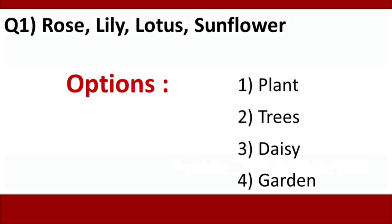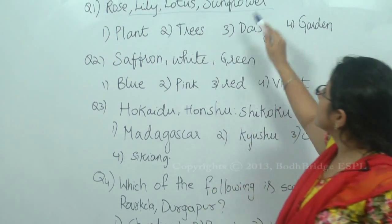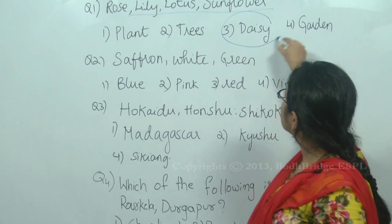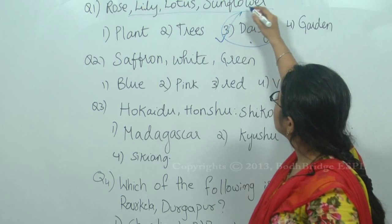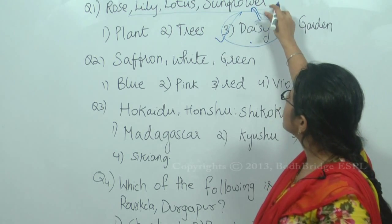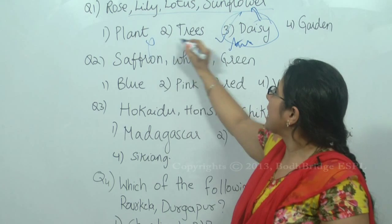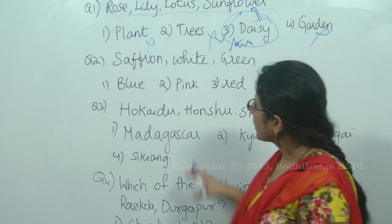Question 1: Rose, Lily, Lotus, Sunflower. The options are: Plant, Trees, Daisy, and Garden. This is very simple — Rose, Lily, Lotus, and Sunflower are all names of flowers. Option 3, Daisy, is also a flower, so it belongs to this group. The answer is option 3. Plant, Trees, and Garden are eliminated.